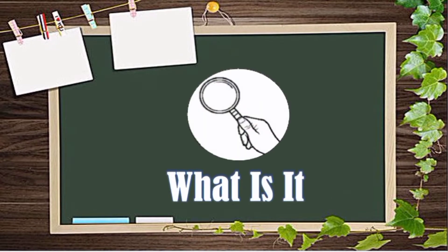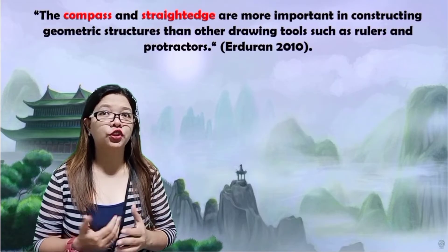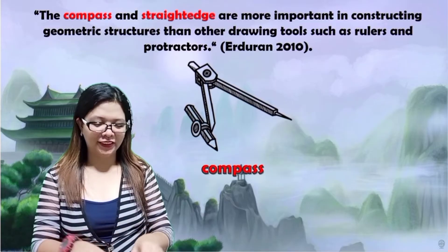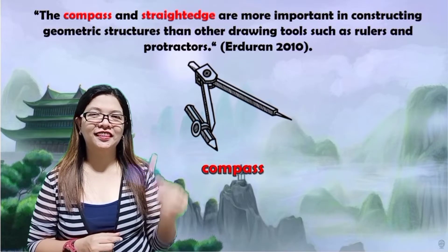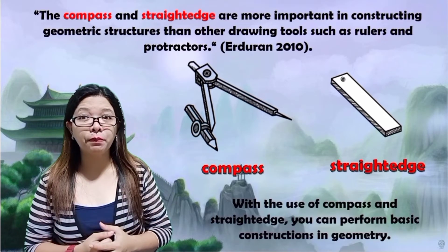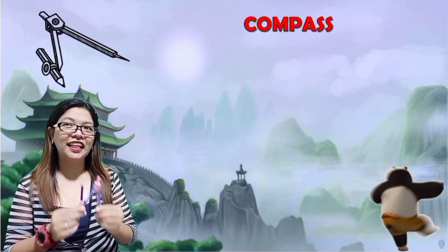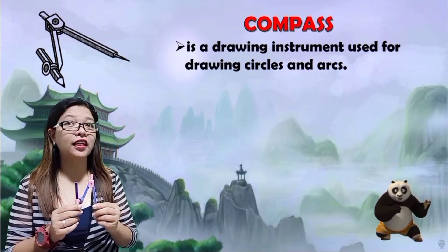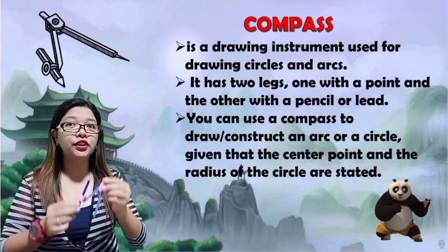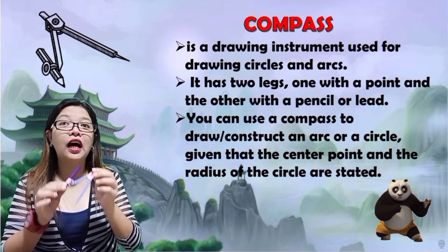What is it? According to Erdogan 2010, compass and straightedge are more important in constructing geometrical structures than other drawing tools such as rulers and protractors. A compass is a drawing instrument used for drawing circles and arcs. It has two legs, one with a point and the other with a pencil or lead. You can use a compass to draw or construct an arc or circle, given that the center point and the radius of the circle are stated.